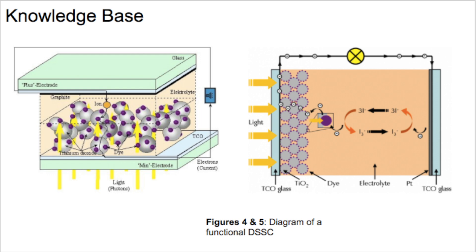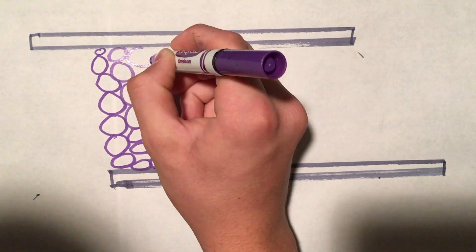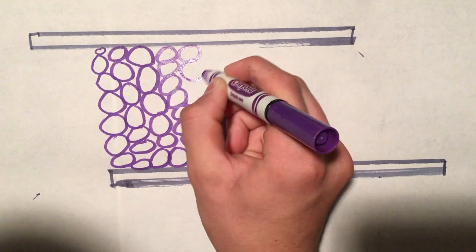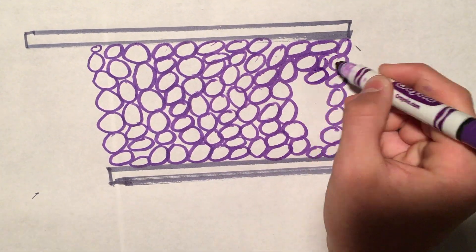Dye-sensitized solar cells are a low-cost, easy-to-construct alternative to traditional silicon solar cells. DSSCs use cheaper materials that allow for the cost of construction to be lowered.